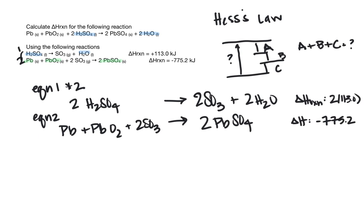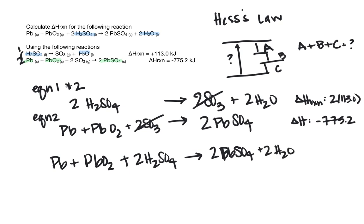We want to look over this and we can see that the sulfates will cancel. So we would have lead plus PbO2 plus 2H2SO4 gives me 2PbSO4 plus 2H2O. This equation that we just wrote exactly matches the one we're looking for. So the delta H is you just add the values together, and the delta H for this reaction is negative 549.2 kilojoules.